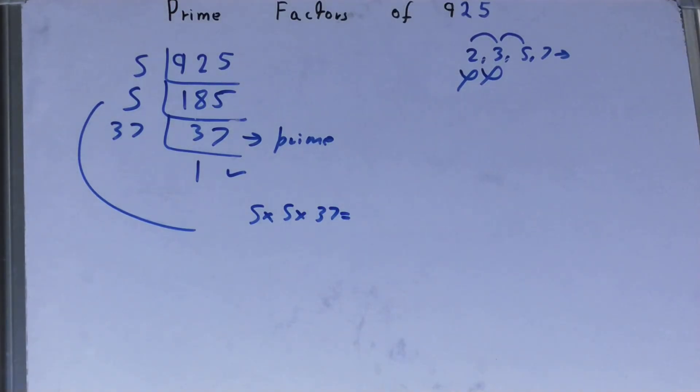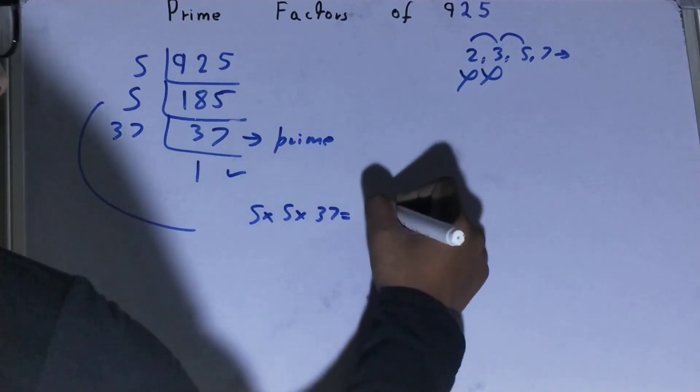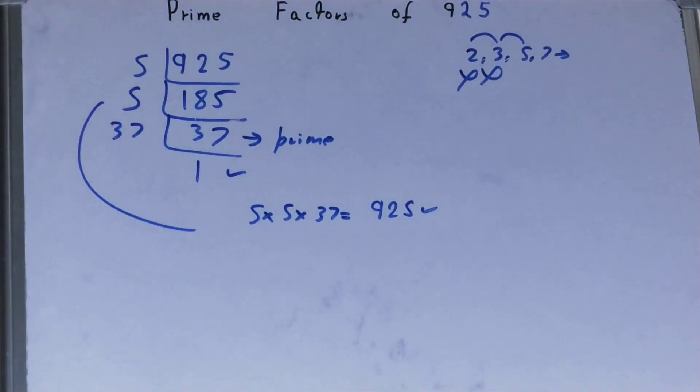...whether it is right or not, you can multiply it, and if on multiplying you get the number back again, that means your calculation is fully correct. If not, you need to recheck. So this was all about prime factors...